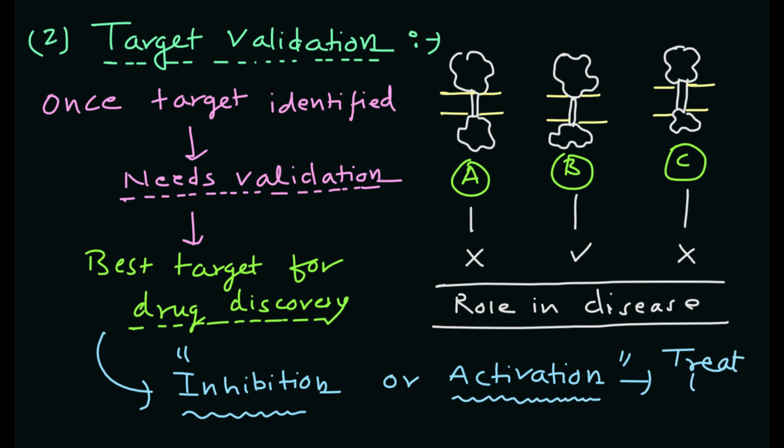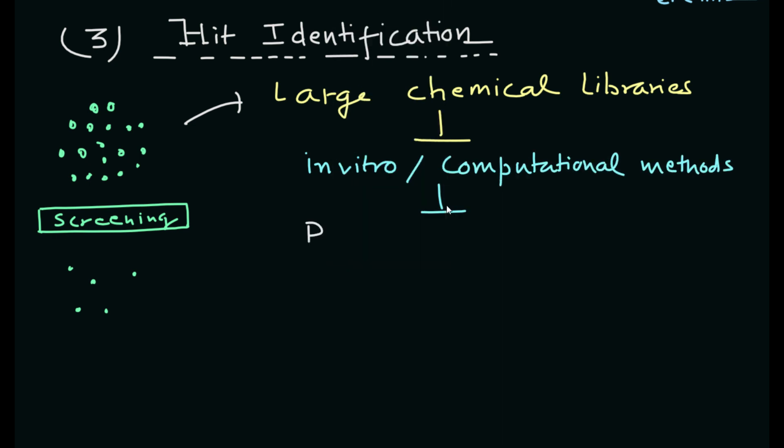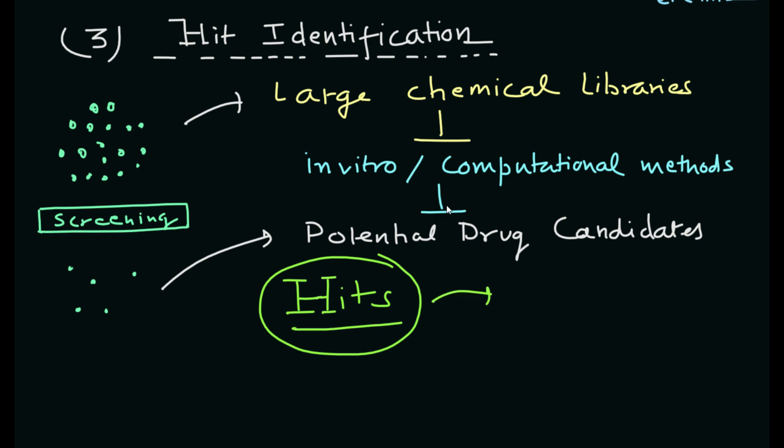Next is hit identification. Researchers screen large chemical libraries or use computational methods to identify potential drug candidates that bind with the target. These initial clinical compounds are known as hits. In this stage, various in vitro assays, virtual screening, and molecular dynamic simulations can be performed to identify the hits.